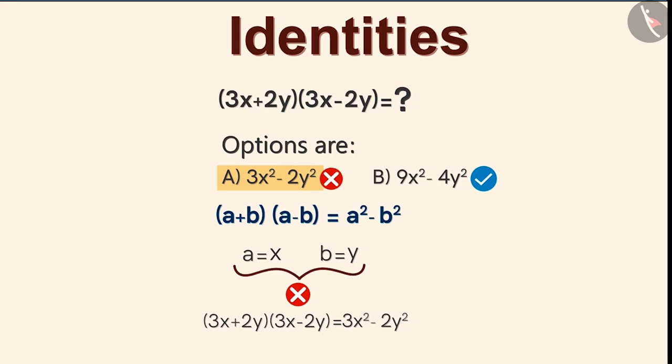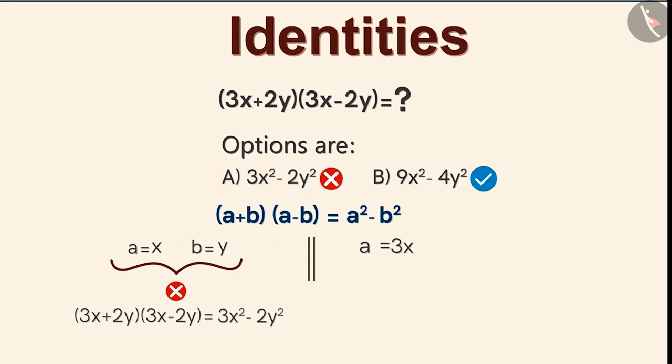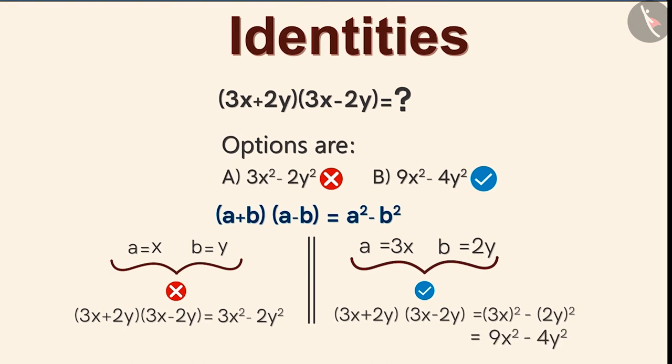But this is an incorrect answer. We should take A as 3x and B as 2y. Solving this identity we get this as answer. Therefore the correct option is B. So we should be careful to ensure that the square of the coefficients are also kept in mind along with the variables.